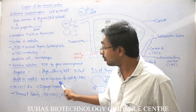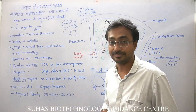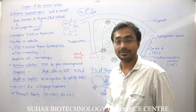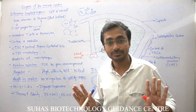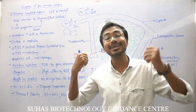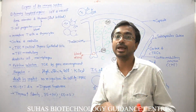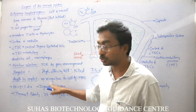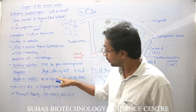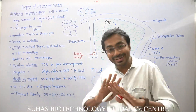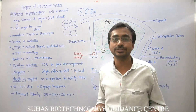Some T-lymphocytes don't recognize any self antigen in the group of MHC — there is no recognition at all, so they completely neglect self antigen. They can also create a problem, and that's why they are also killed. This is called death by neglect — you should not completely neglect the self antigen.